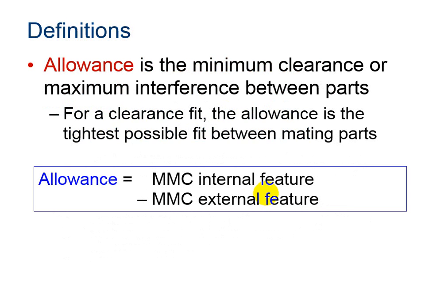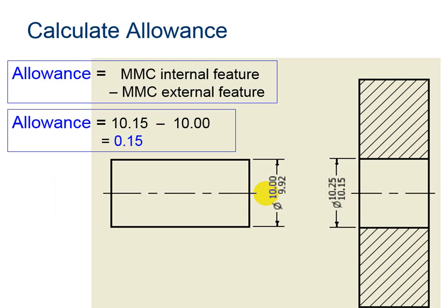Allowance is the minimum clearance or maximum interference between parts. For a clearance fit, the allowance is the tightest possible fit between mating parts. So the maximum material condition from the internal feature minus the maximum material condition for the external feature.